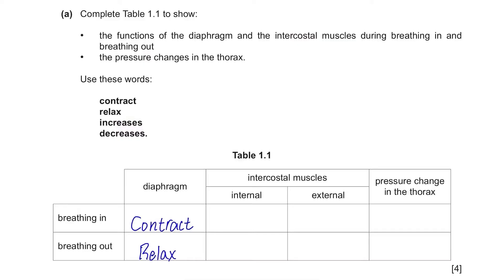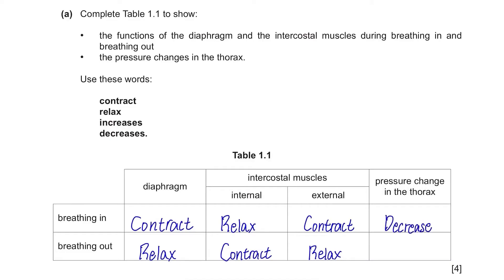Your internal intercostal muscles will relax when breathing in, and your external intercostal muscles will contract. The opposite happens when you breathe out. The pressure in the thorax will decrease as you're breathing in and expanding the volume, and the pressure will increase as you're breathing out since there will be less volume. You need to memorize this whole table because it's a common and easy question to score.